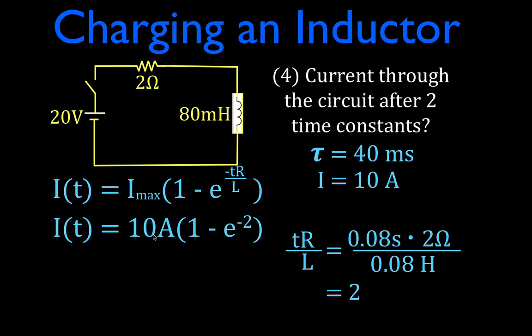And that means that it's 10 times 1 minus E to the negative 2. This is 2 time constants, then this is minus 2. If it was 3, minus 3, minus 4, minus 5, all that kind of thing. All right.